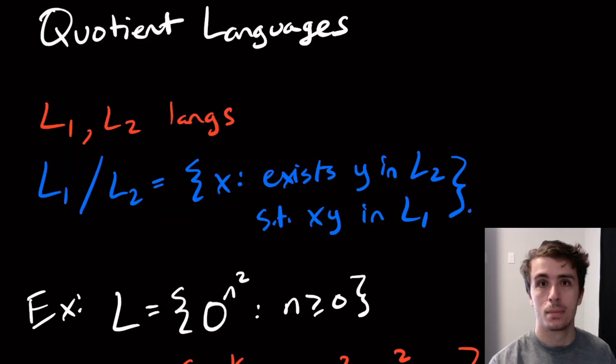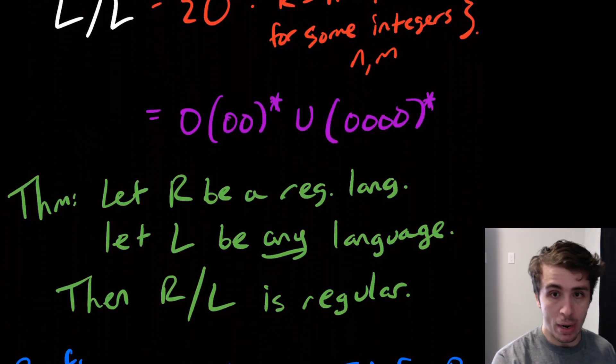Hi, welcome to another edition of Easy Theory. We're going to do an example of where quotient languages can actually be really useful. We showed that if we have a regular language and any language after that, then R/L, the quotient, is regular.